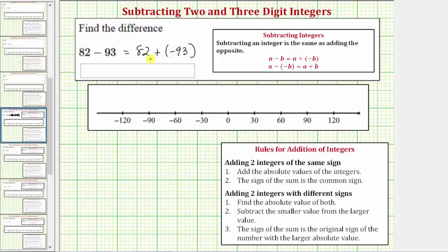Now looking at this sum, we should be able to recognize that the negative 93 is going to outweigh the positive 82 and therefore this sum is going to be negative.